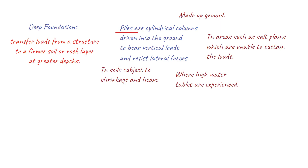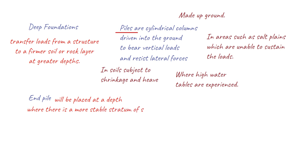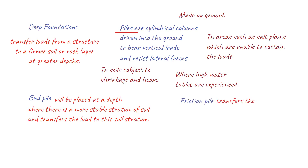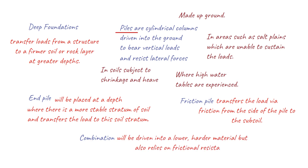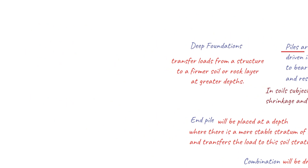Piles have been used in construction for many years. The Romans used timber piles in the construction of the first bridge across the River Thames in 60 AD, and the Royal Palace in Amsterdam is constructed using timber piles. In the UK, the most common timber used for timber piles is Douglas fir, although oak and elm are also suitable. An end pile is placed at a depth where there is a more stable stratum of soil and transfers the load to that stratum. A friction pile transfers the load via friction from the side of the pile to the subsoil. A combination pile is driven into a lower harder material but also relies on frictional resistance or enlarging the base to improve bearing capacity.